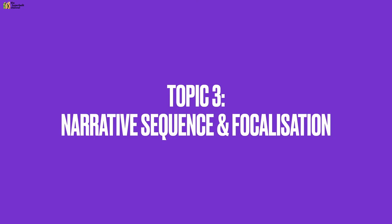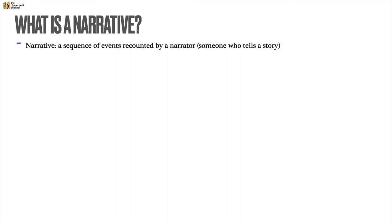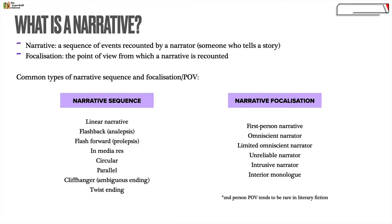Topic three: narrative sequence and focalisation. A narrative is simply a sequence of events recounted by a narrator — someone who tells a story. Focalisation is the point of view from which a narrative is recounted. Common types of narrative sequence include linear narrative (following the story in its original chronology), flashback (analepsis), flash forward (prolepsis), and in medias res — a Latin term for starting in the middle of something.